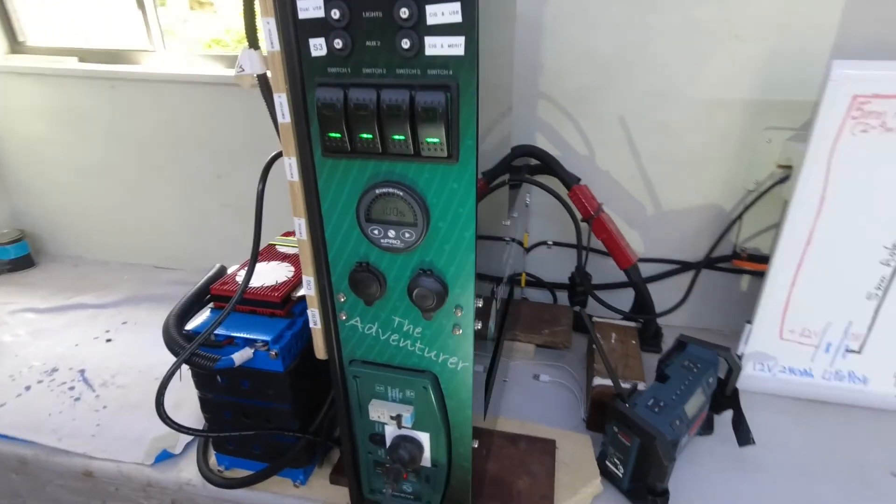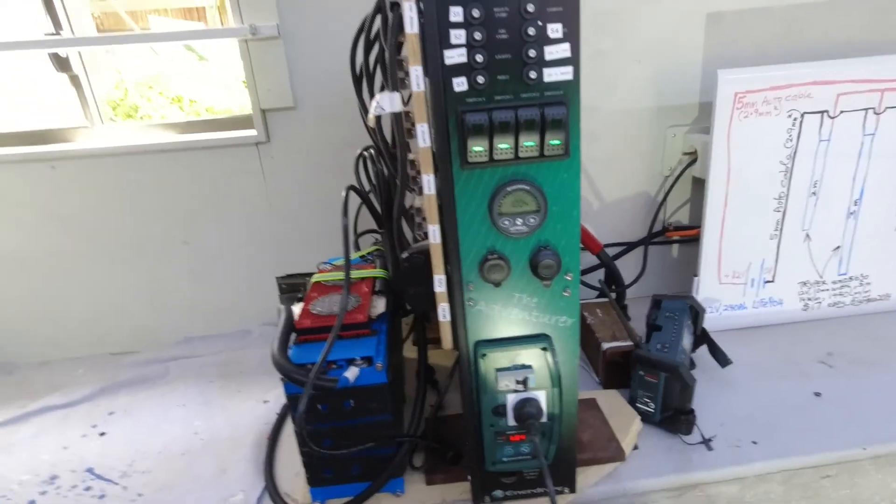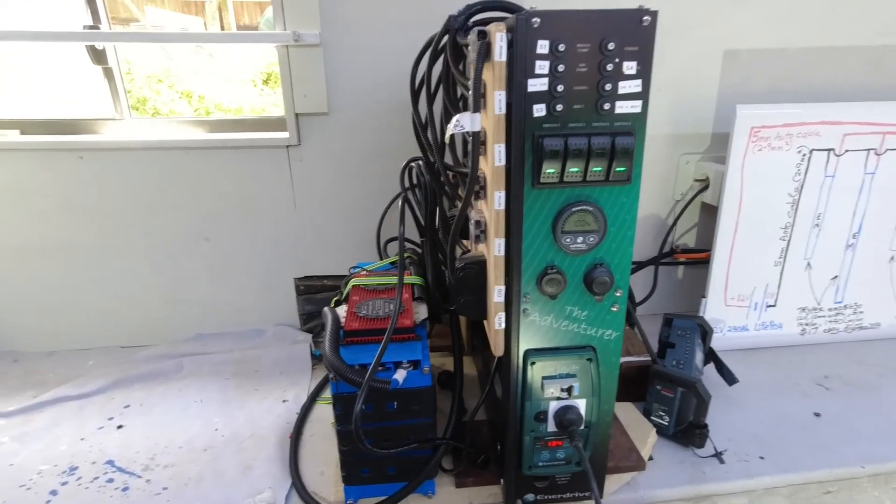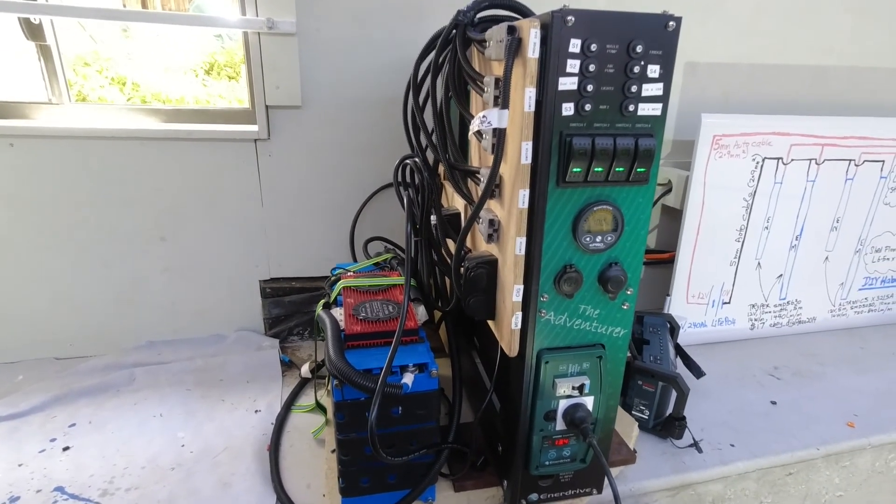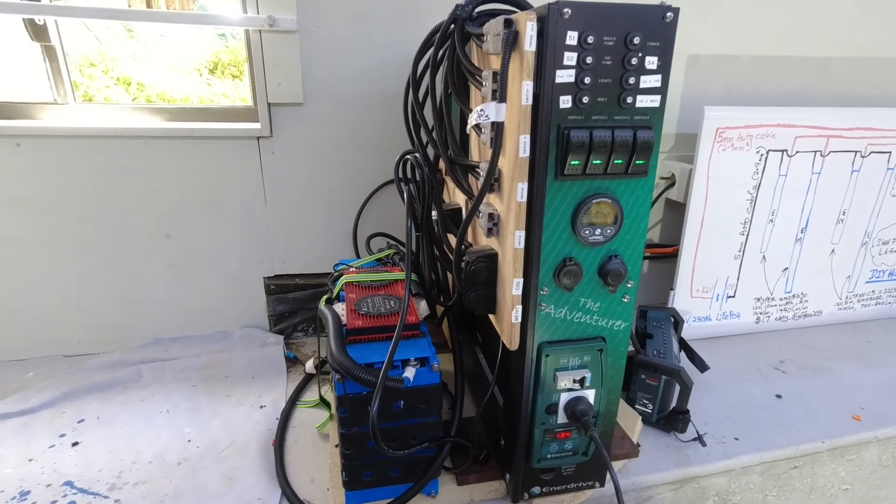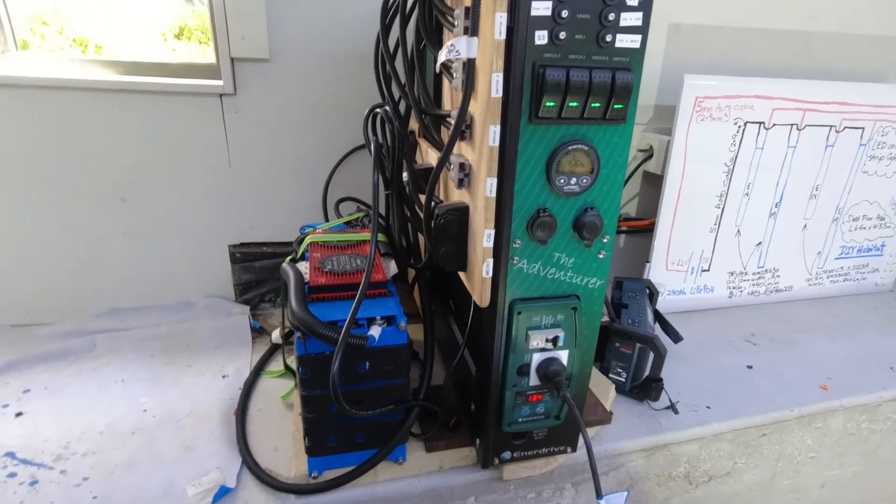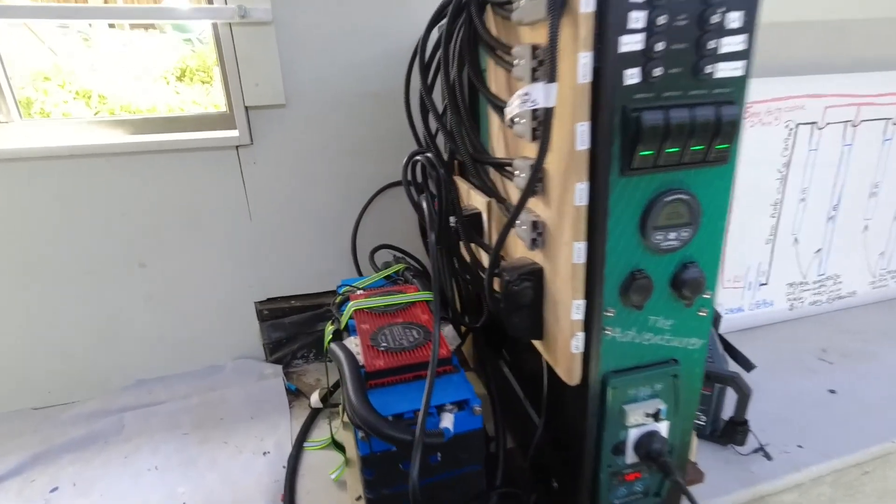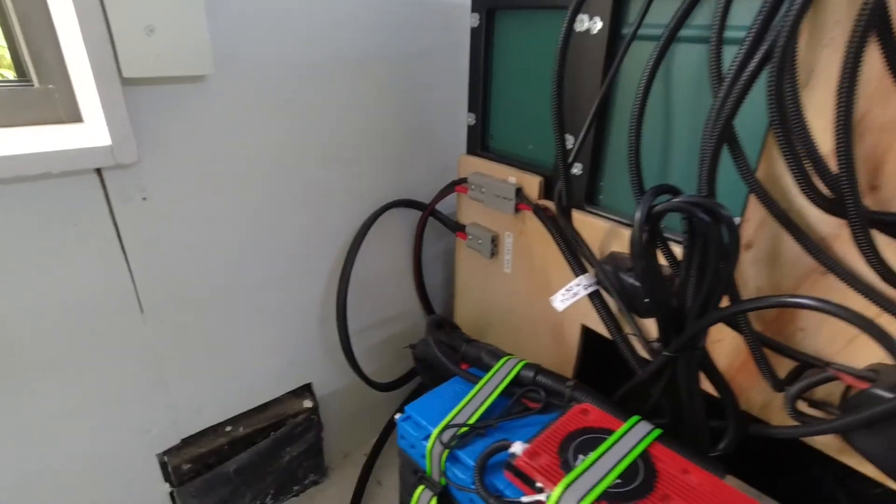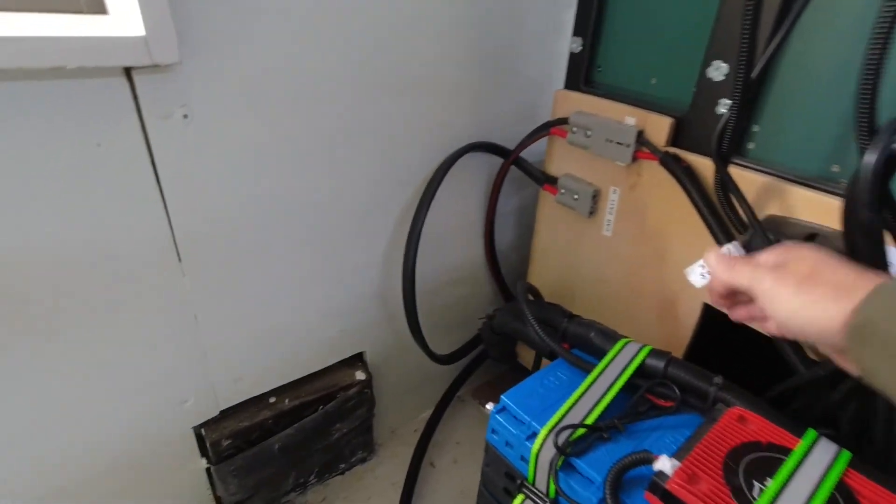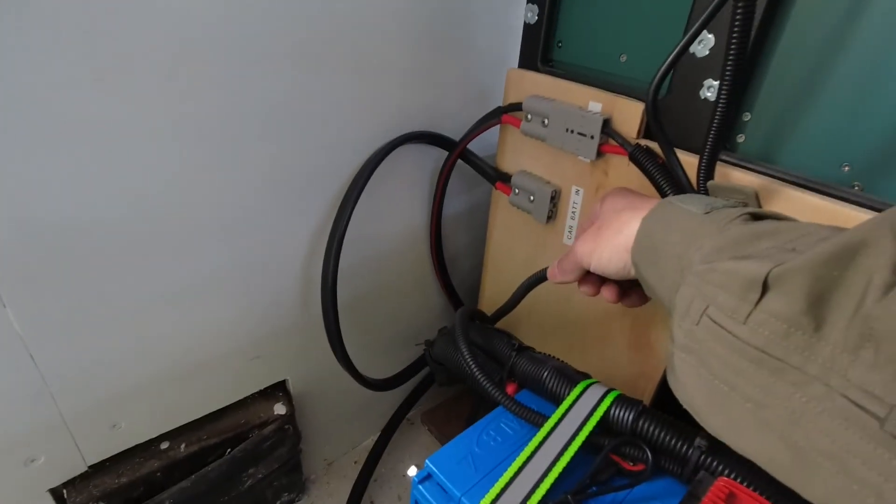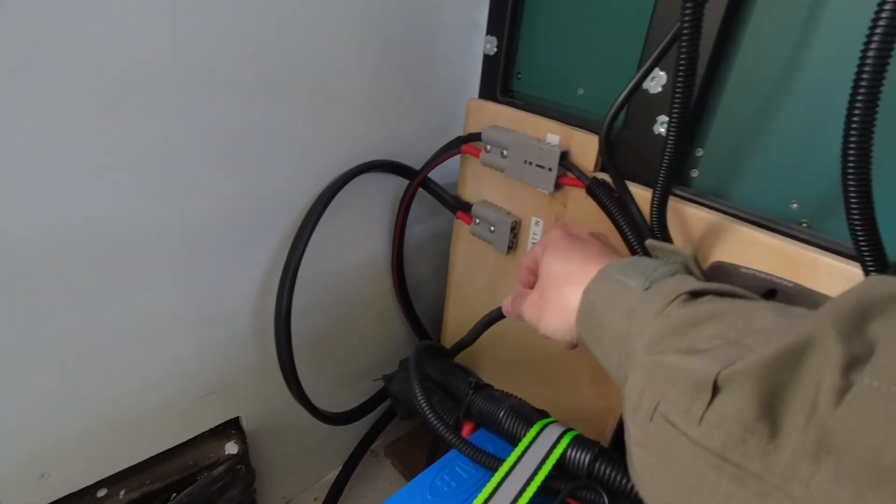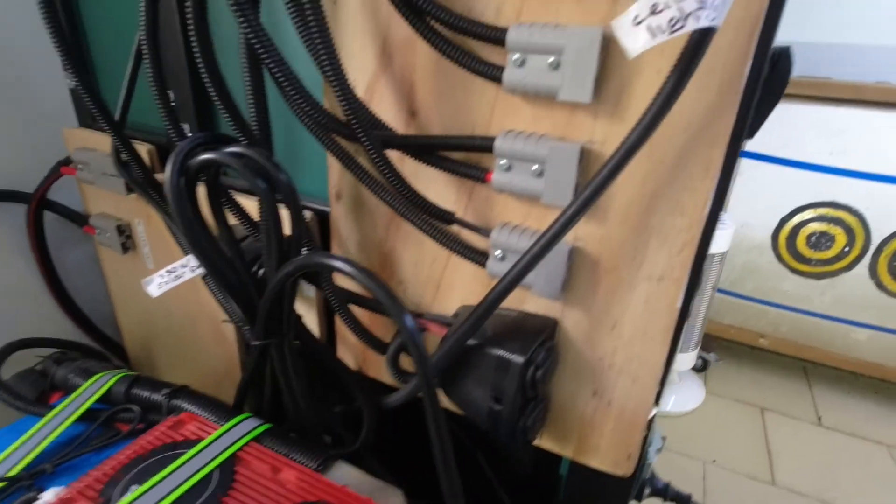And this is my Enerdrive Adventurer solar charging, AC DC charging system, DC DC charging system and inverter. And we follow the cable trail, that's from the ceiling lights, and it comes to the load.